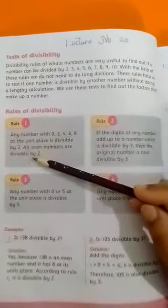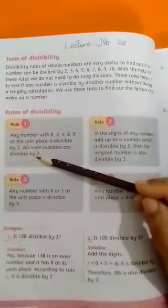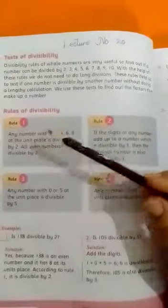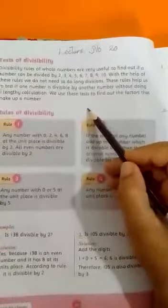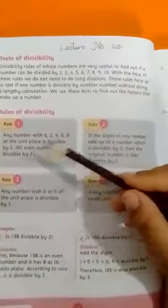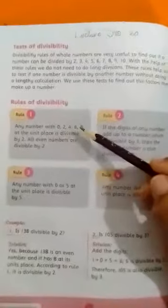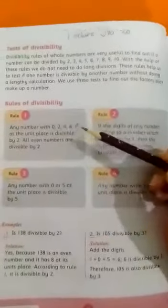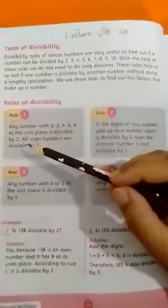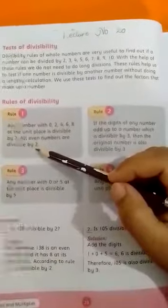Rule 1 is for which? For divisibility by 2. Which number can we divide by 2? A number whose unit place - the first one place - has 0, 2, 4, 6, or 8. Then we can easily divide it by 2.